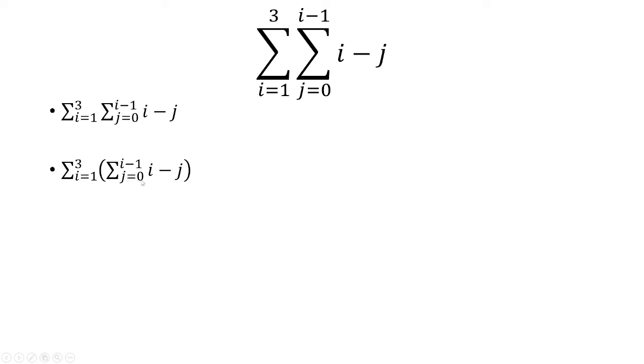j starts at j equals 0. So the first term is going to be i minus 0. The second term will be j equals 1, so i minus 1. And then you go i minus 2, i minus 3, all the way up to i minus the quantity i minus 1.